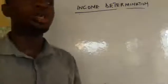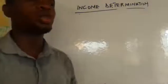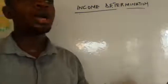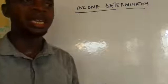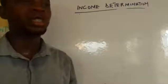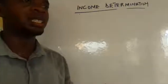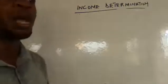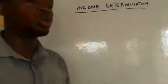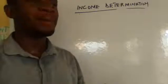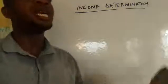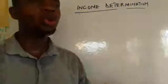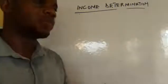When we talk about the two-sector model, we are looking at two different participants. The two-sector model is the kind of economy whereby there are just two major participants, namely the household and the firms.